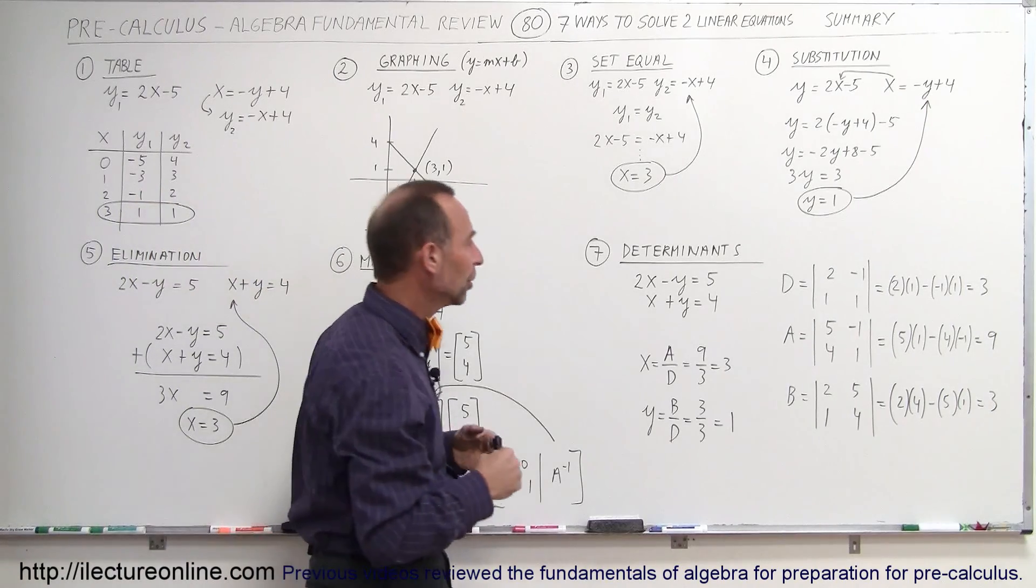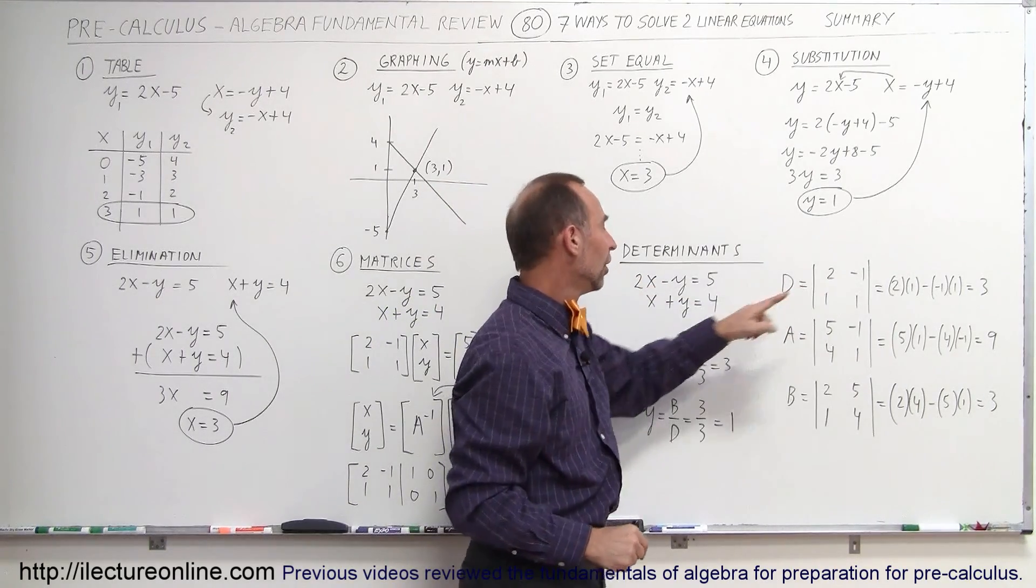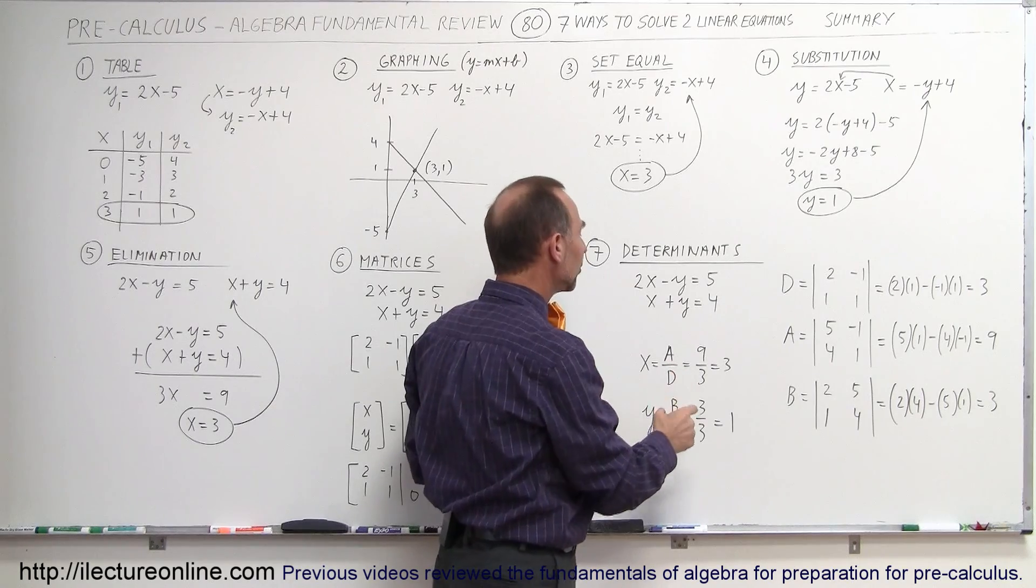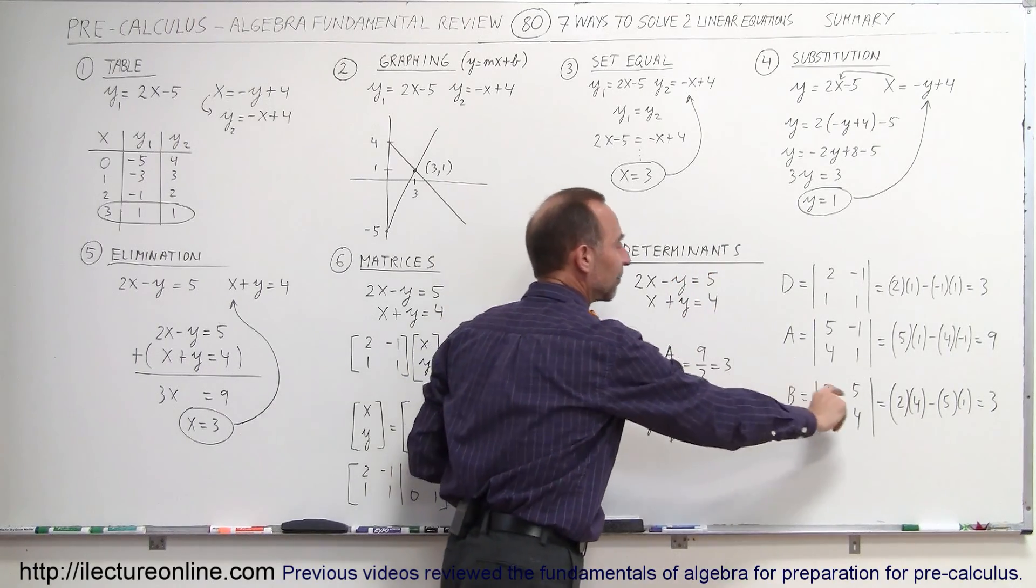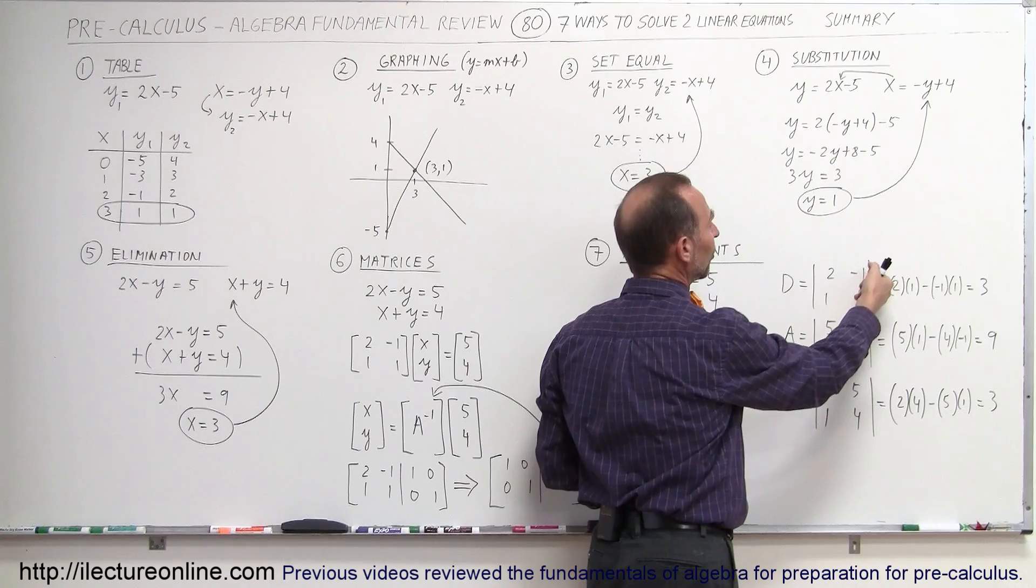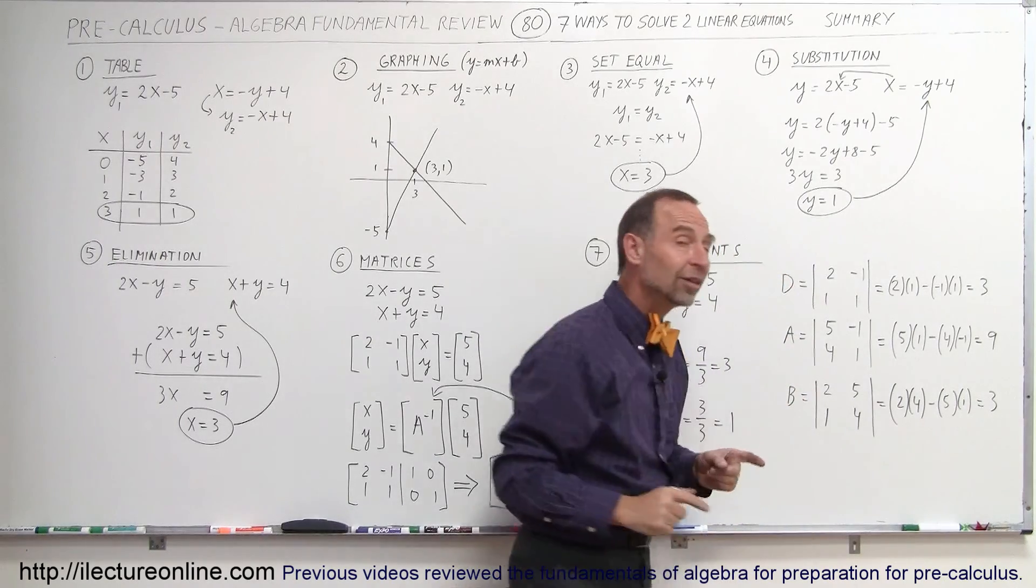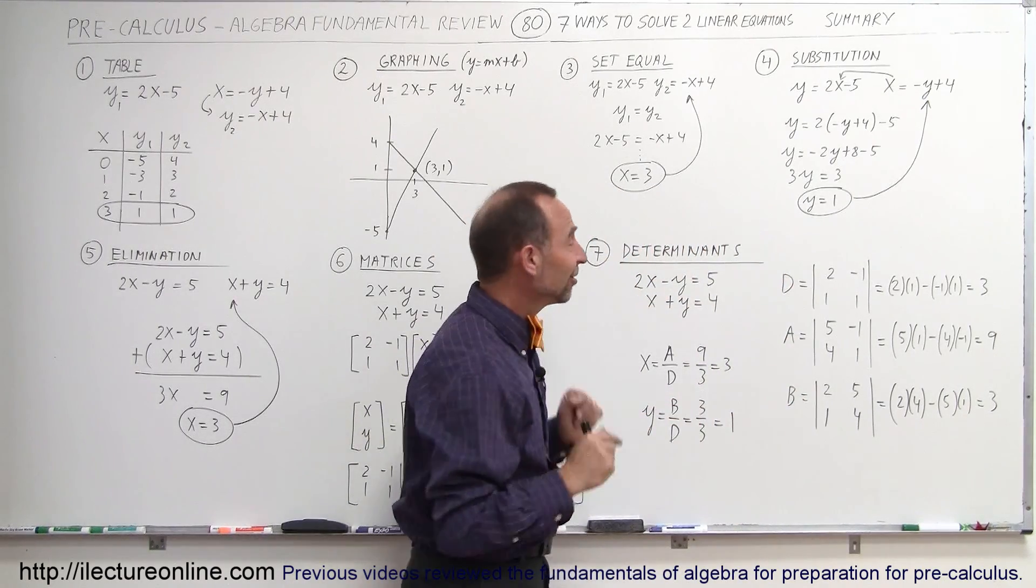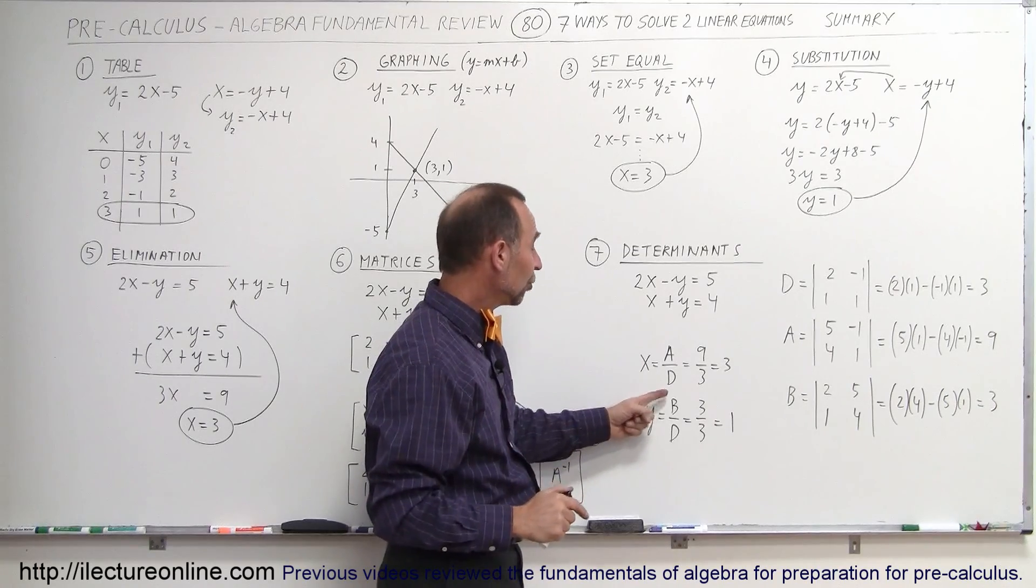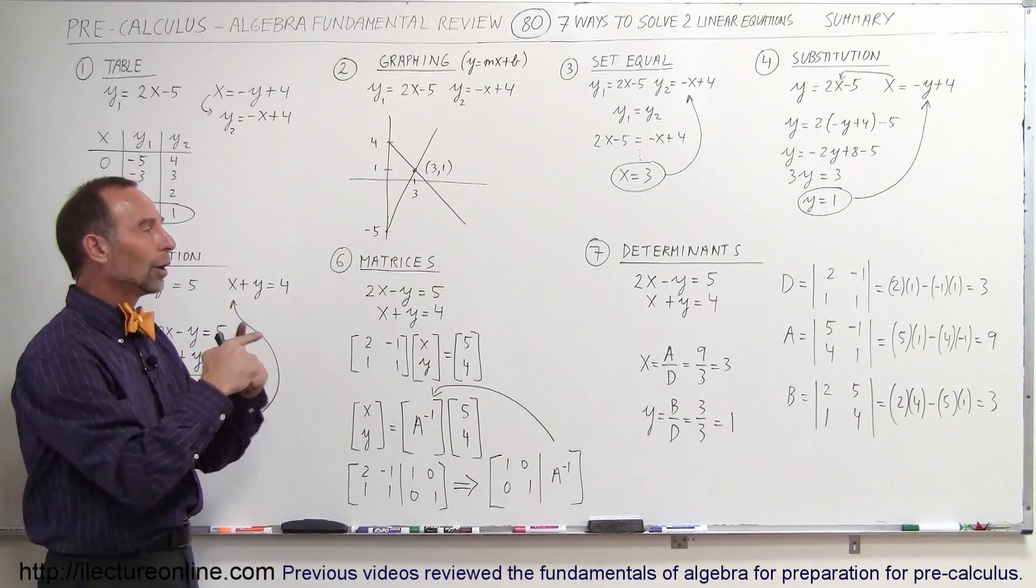The final method is called the method of determinants. You put the two equations in the exact same format. You take the coefficients of the x and y's and put them in one determinant. Then you take the same coefficients, but you replace the x coefficients by the two constants, 5 and 4. Then you take a third matrix, which you take the y coefficients, replace it by the 5 and the 4. Then you solve the three determinants simply by multiplying these two together, and then subtract when you multiply those two together. So it's 2 times 1 minus the minus 1 times 1, and you get a value. You do that for all three determinants. To find the value for x, you take the A determinant divided by D, and then to find the value for y, you take the B determinant divided by D, and you get the x and y values that are the solution to the point where the two lines cross.